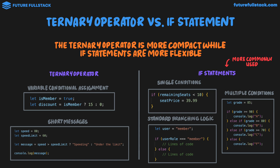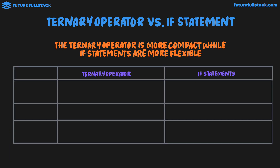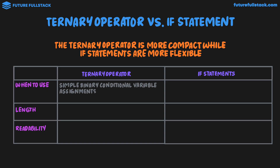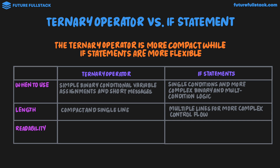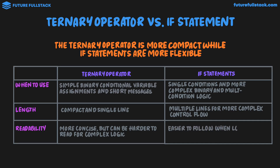Let's quickly compare the ternary operator and if statements to make the differences crystal clear. In a summary table: the ternary operator is used for simple binary conditional variable assignments and short messages, while if statements are used for single conditions and more complex binary and multi-condition logic. A ternary operator is typically compact and single-line, whereas if statements span multiple lines. For readability, ternary operators are more concise but can be harder to read for complex logic, whereas if statements are easier to follow when logic is more complex.